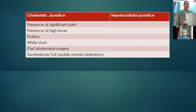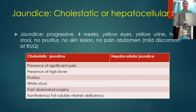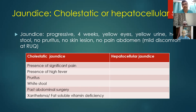The rest of the history was unrevealing. While approaching a case of jaundice, our basic intention is to differentiate between cholestatic and hepatocellular jaundice. In this case, there was jaundice with dark urine and yellow eyes, but no change in stool color, no pruritus, no significant pain abdomen, no fever, and no prior abdominal surgery. This makes cholestatic jaundice unlikely.